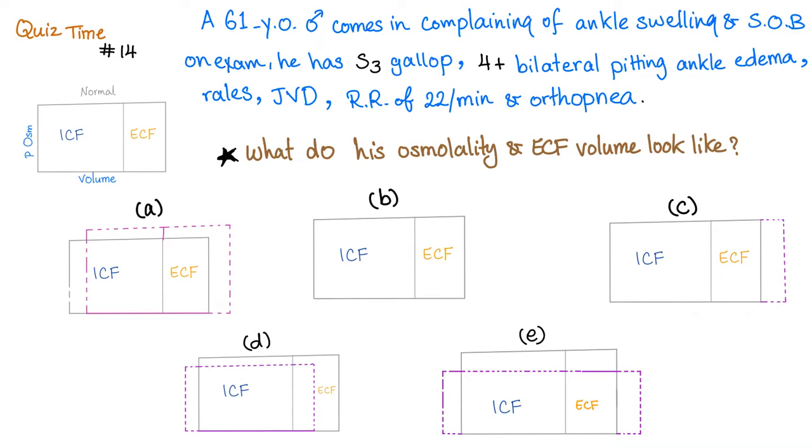Quiz time. A 61-year-old male comes in complaining of ankle swelling, short of breath. On physical exam, he has S3 gallop rhythm, 4-plus bilateral pitting ankle edema, rales, jugular venous distension, respiratory rate of 22, and orthopnea. What do his osmolality and ECF volume look like? And here is the normal, and here are your five choices. Let me know the answer in the comments. You'll find the answer in the next video.